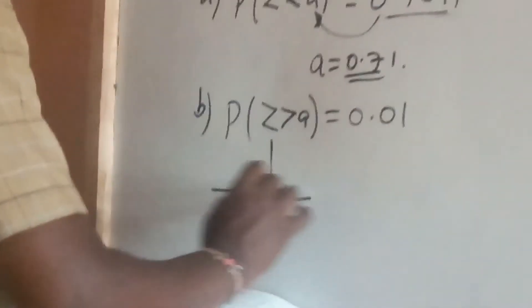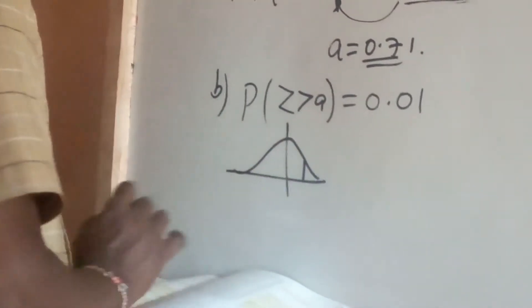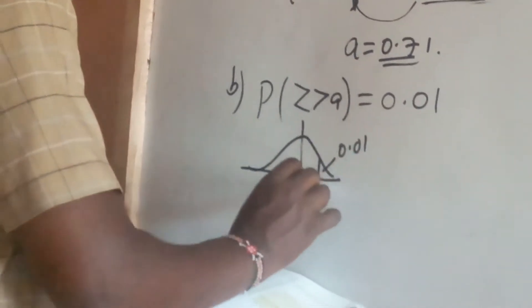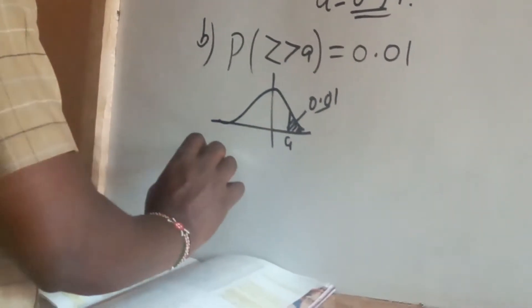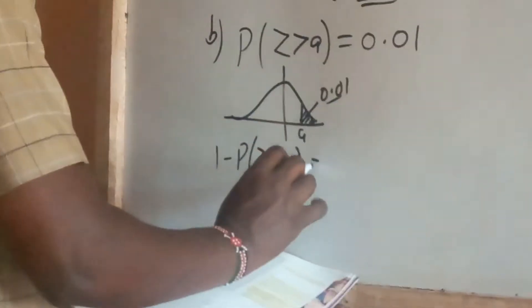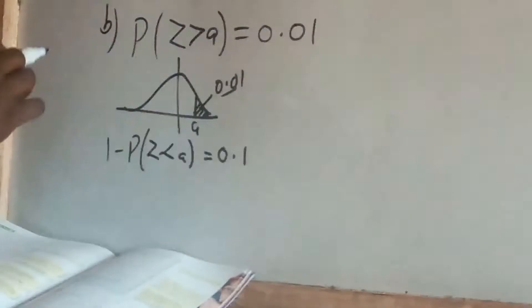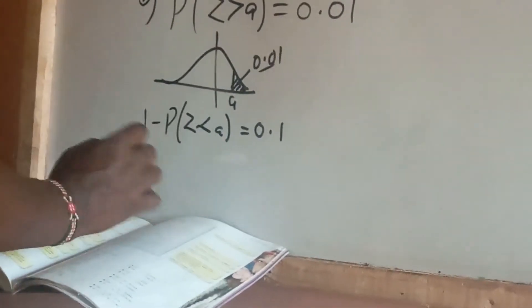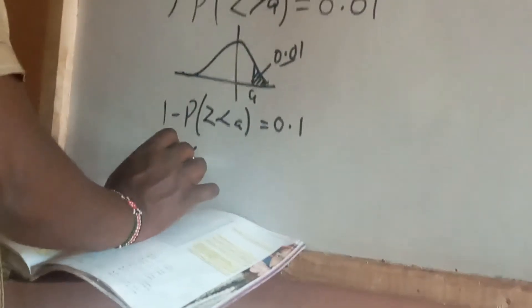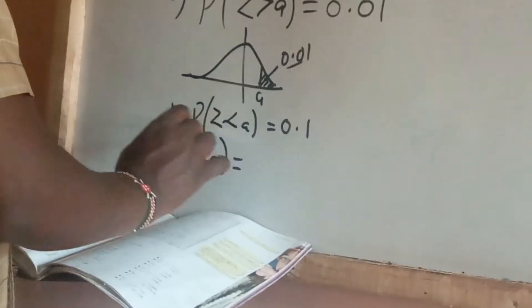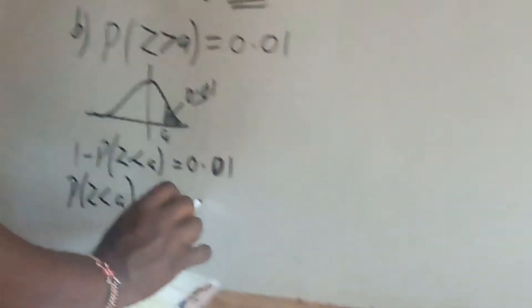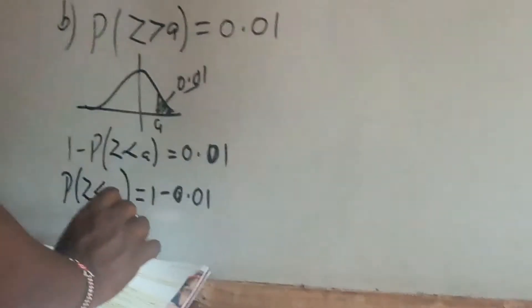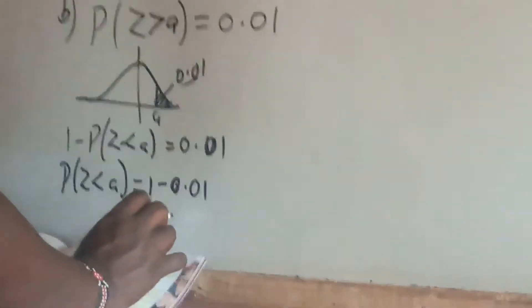Because this is greater than A and the area is very small — 0.01 — A is to the right. We can identify: 1 minus the probability of Z less than A gives us 0.01. To make A the subject, we rearrange so that P(Z < A) equals 1 minus 0.01, which is 0.99.